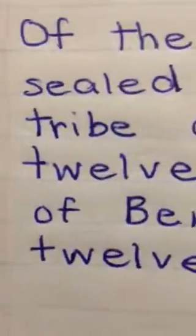Of the tribe of Issachar were sealed 12,000. Of the tribe of Joseph were sealed 12,000. Of the tribe of Benjamin were sealed 12,000.